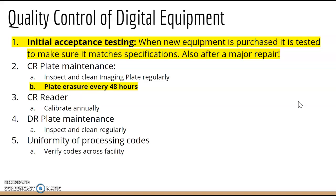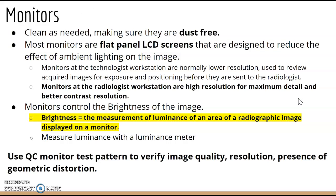For digital equipment QC, there is always initial acceptance testing when new equipment is purchased to verify it matches specifications. Physics will also perform testing after a major repair — for example, if a tube is replaced, it must pass acceptance testing before use on a patient. CR plate maintenance includes inspecting and cleaning imaging plates regularly and erasing cassettes every 48 hours.